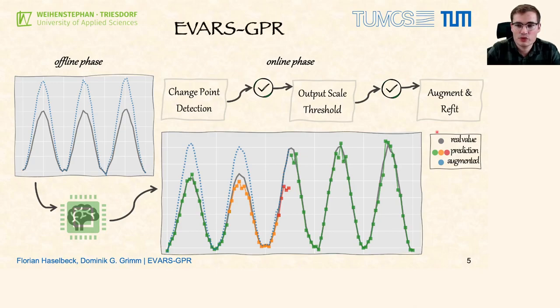And that's EVOS GPR — a novel online time series forecasting algorithm that is able to quickly react to shifts in the target variable scale of seasonal data.